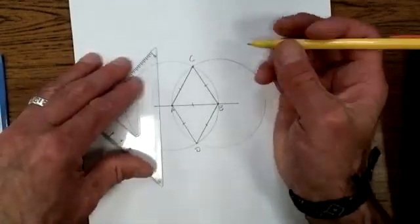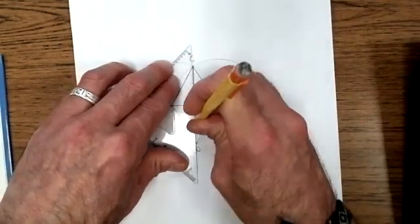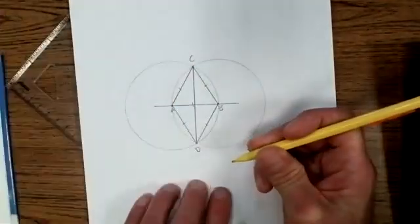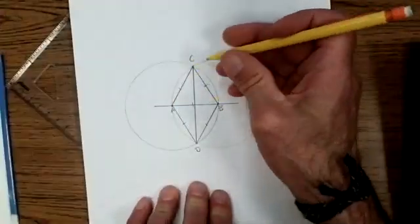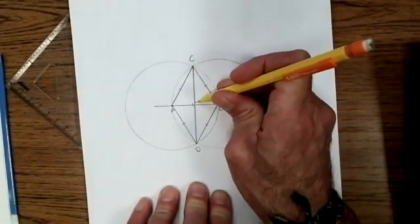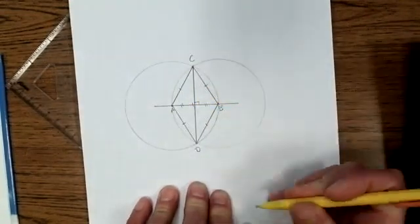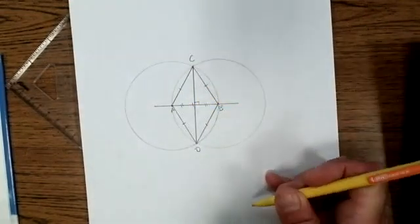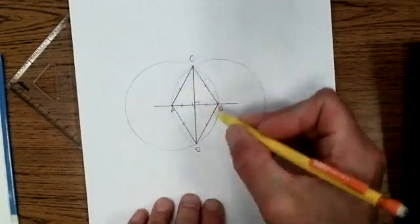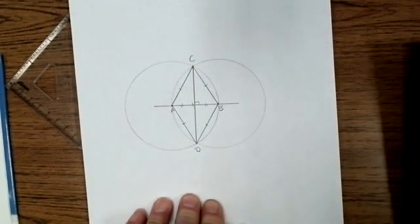And even cooler, I think, is that if we connect C to D, then what we've done is we've cut this rhombus in half. We've made a right angle here and we've bisected side AB. So these two circles, again, give us two points that allow us to bisect a line segment.